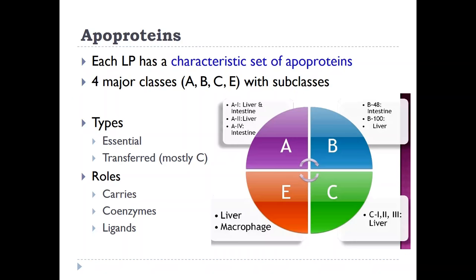Apoproteins are very specific to each type of lipoprotein and are almost defining the type of lipoprotein they are on. There are four major classes of apoproteins: A, B, C, and E — there is no D — and most of them have multiple subclasses. There are two different types: one that is essential and an integral part of the lipoprotein that does not get transferred, and the transferred type, which gets transferred from one molecule to another depending on need. The transferred types are usually from class C and E, which get transferred from HDL to VLDL and chylomicrons, and vice versa.